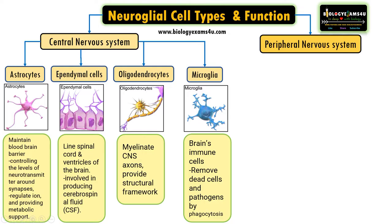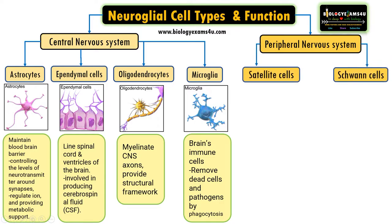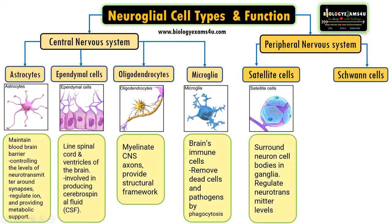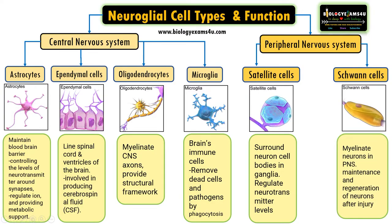Now let us see what cells are present in the peripheral nervous system. There are two types: satellite cells and Schwann cells. Satellite cells surround neuron cell bodies in ganglia and regulate neurotransmitter levels. Schwann cells play the same role as oligodendrocytes in the central nervous system — they are responsible for myelinating neurons in the peripheral nervous system and are also involved in the maintenance and regeneration of neurons after injury.